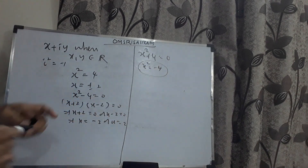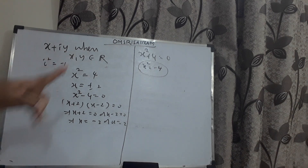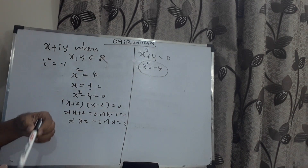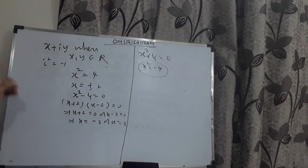There is no provision for getting roots of such equations. Such equations are called having complex roots. Such roots are called complex, imaginary, not real, or unreal. Therefore, there was a necessity to introduce another set called the set of complex numbers.